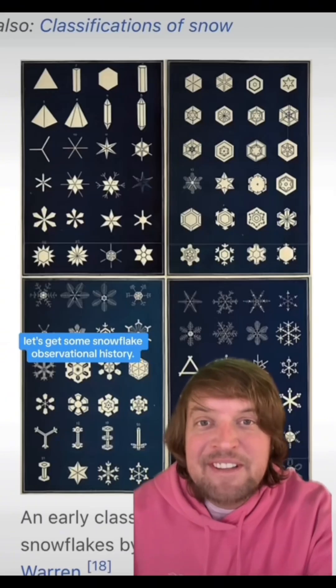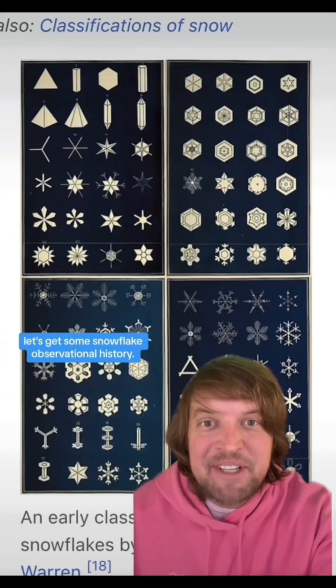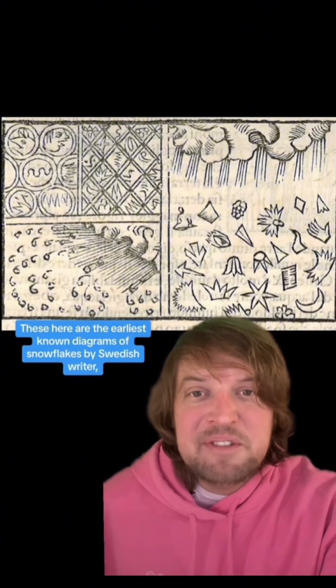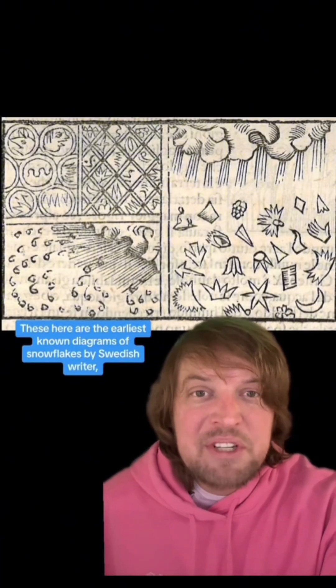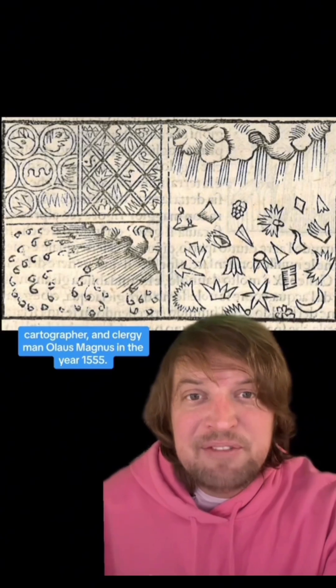But even more firstly, let's get some snowflake observational history. These here are the earliest known diagrams of snowflakes by Swedish writer, cartographer, and clergyman Olaus Magnus in the year 1555.